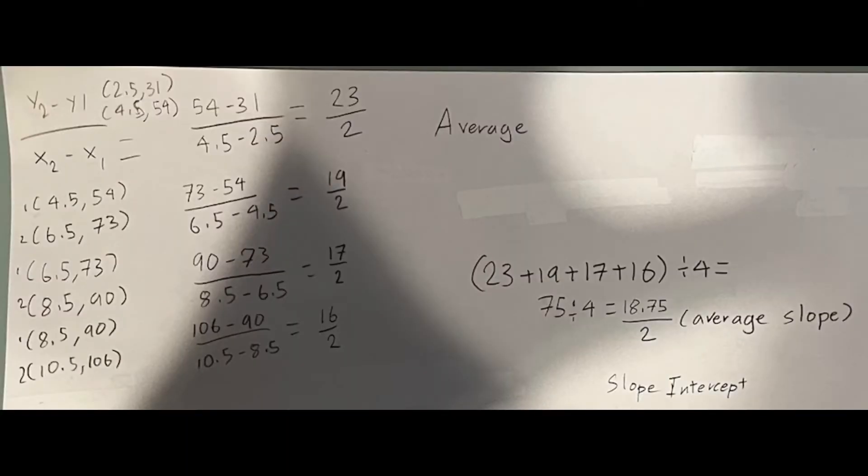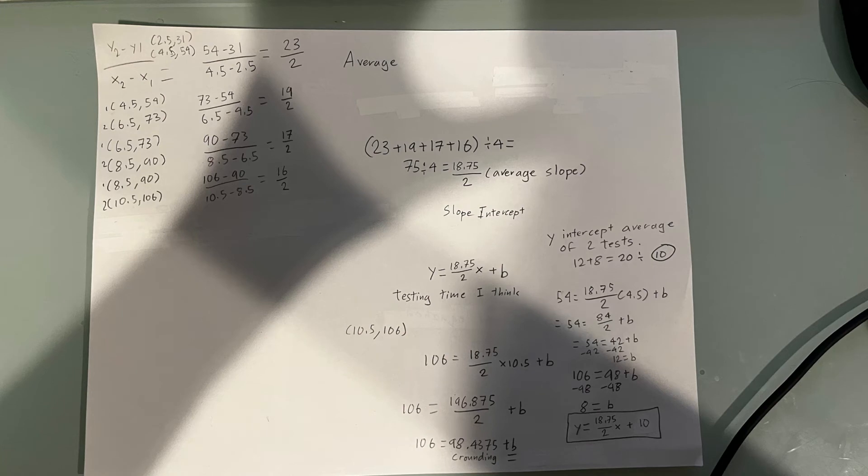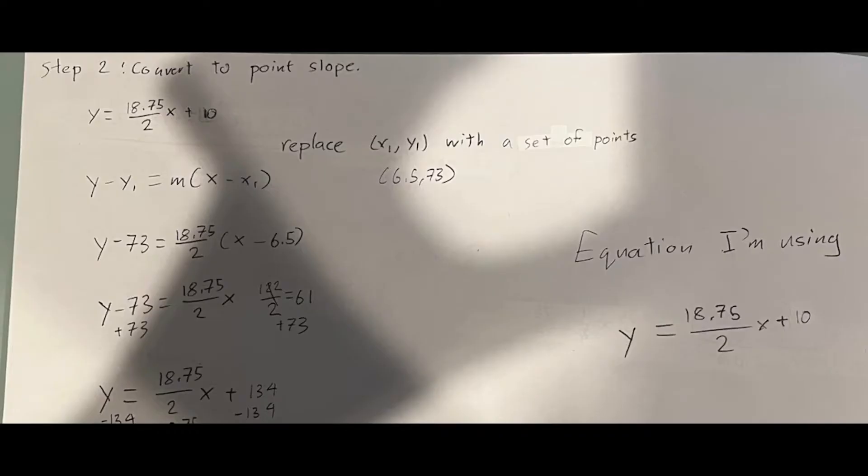Step three is the equation. The first step for me was getting the average slope of the entire line. After that, I made a slope-intercept equation to figure out the y-intercept of my line. Once I got that, I then made a slope-point equation, and I decided that that's the equation I'm going to use.